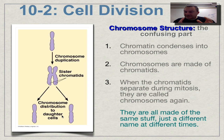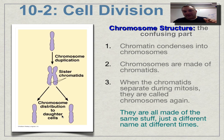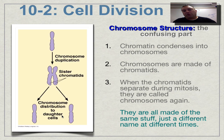Science has made this terminology confusing — you need to learn a bunch of 'chroma' words: chromatin, chromosome, and chromatid. They all sound the same because they're all actually the same stuff; they just get different names at different points.